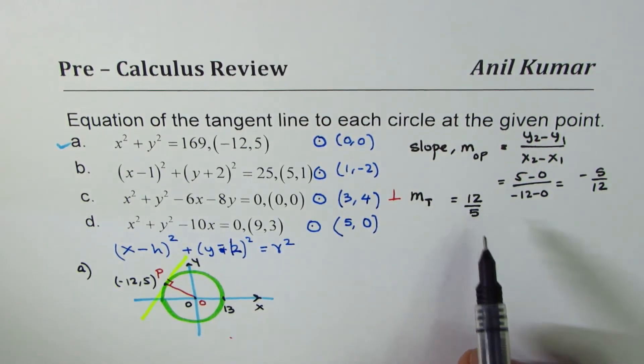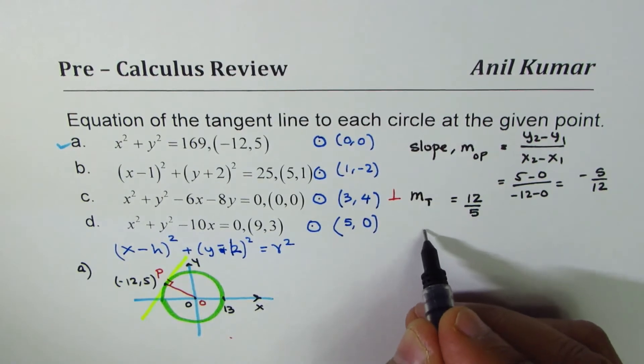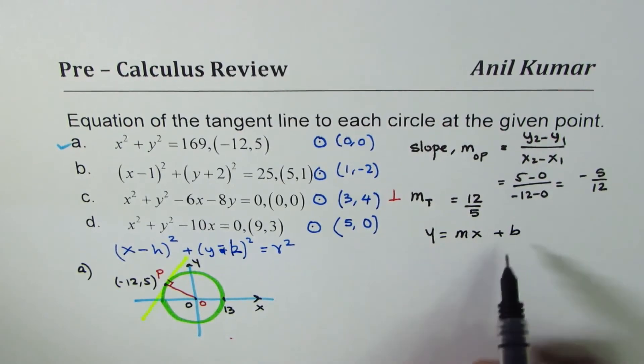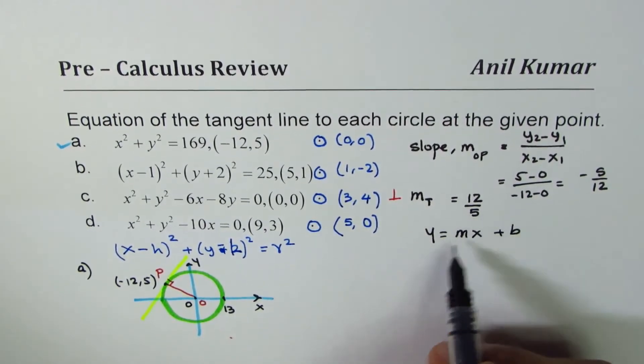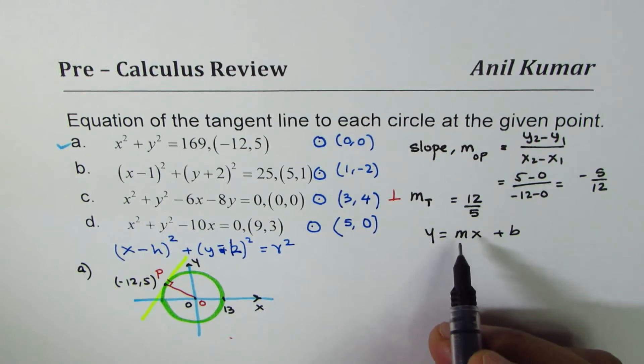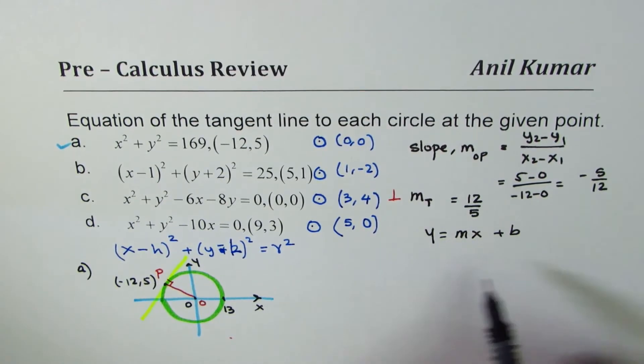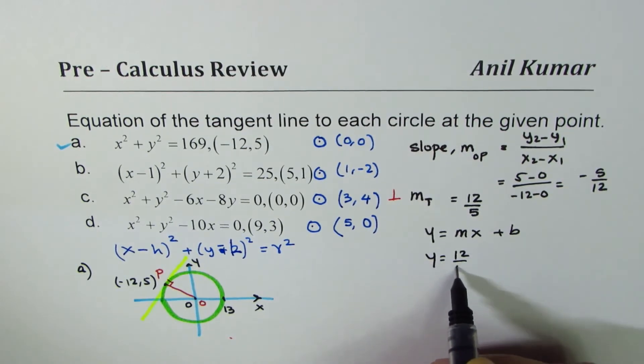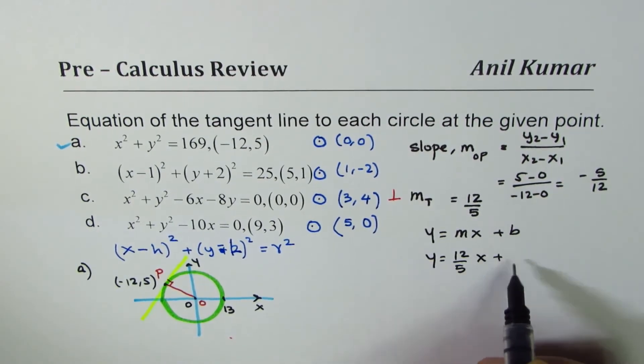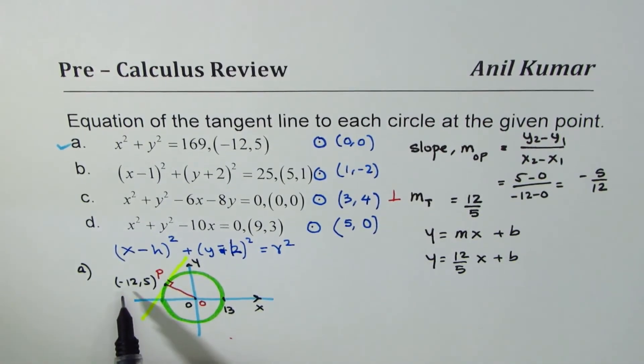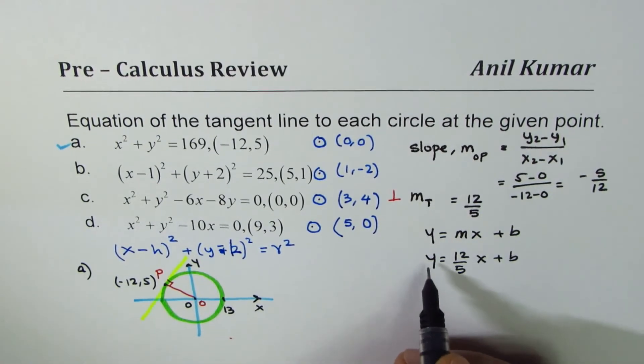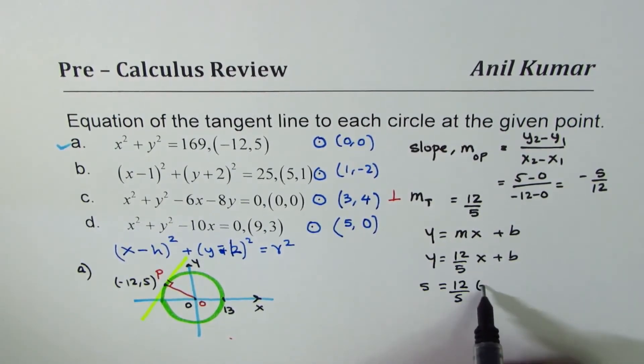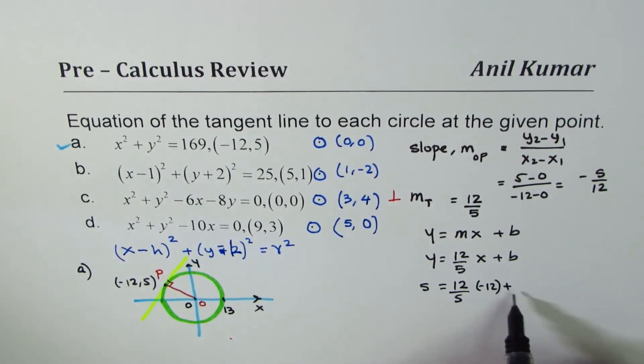Once you know the slope of the tangent, you can use this equation of the line, which is y = mx + b, to find b. Substitute m, which is 12/5. So what we have here is y = (12/5)x + b. To find b, we can always use the point (-12, 5). 5 is the y value, so 5 = (12/5)(-12) + b.